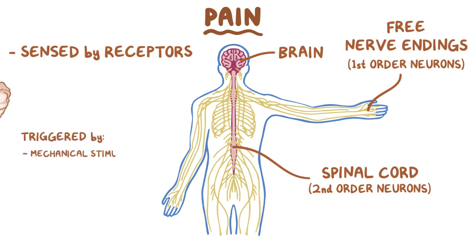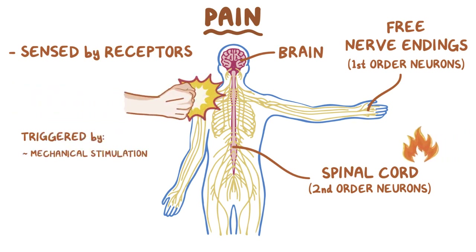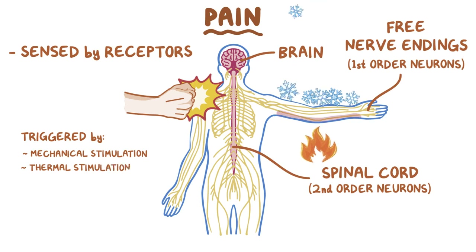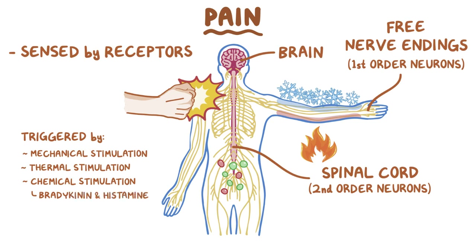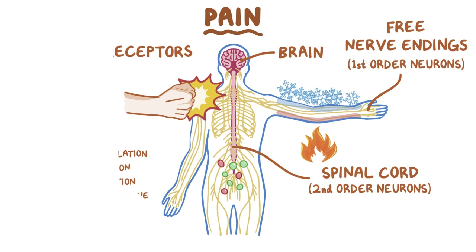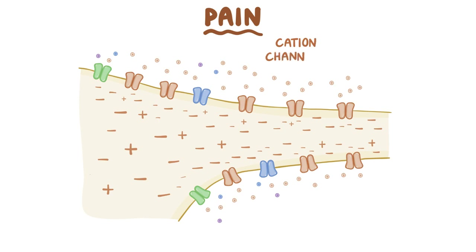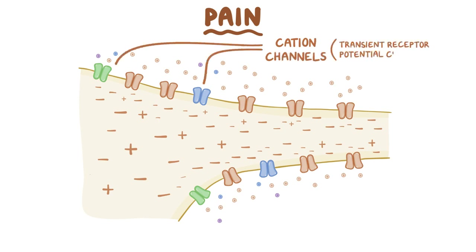Free nerve endings can be triggered in several ways: by mechanical stimulation like getting punched, by thermal stimulation like heat and cold, or by chemical stimulation from molecules like bradykinin and histamine. These noxious stimuli trigger the opening of cation channels on the membrane called transient receptor potential channels.